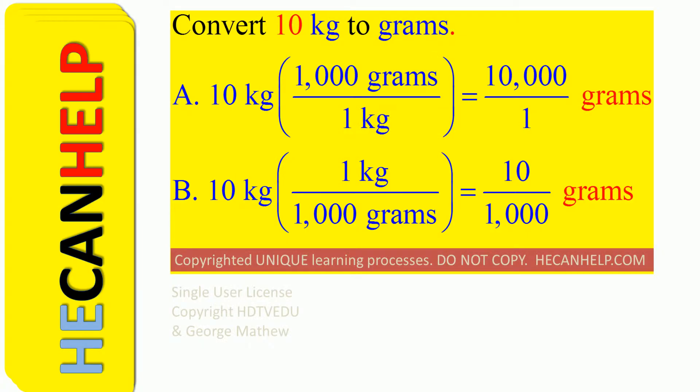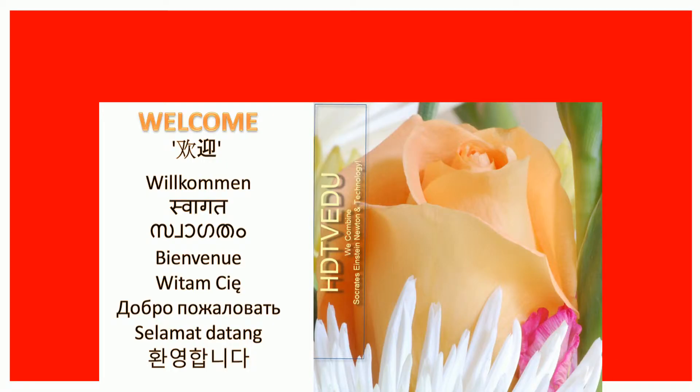A: Is it 10 kg times 1,000 grams divided by 1 kg, equal to 10,000 divided by 1 grams? Or is it B: 10 kg times 1 kg divided by 1,000 grams, equal to 10 divided by 1,000 grams?